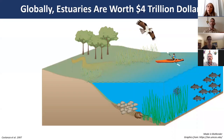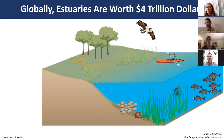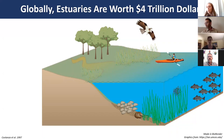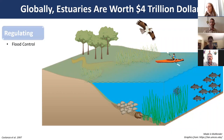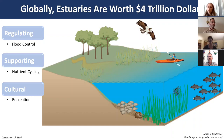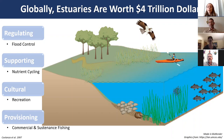Globally, estuaries are worth an estimated value of $4 trillion based on estimates done by Costanza et al. in 1997. This valuation comes from a variety of ecosystem services, including regulating services such as flood control, supporting services like nutrient cycling, cultural ecosystem services like recreation, and provisioning services like commercial and sustenance fishing.